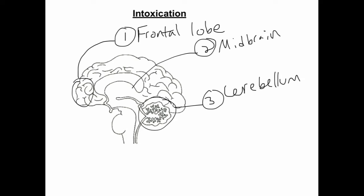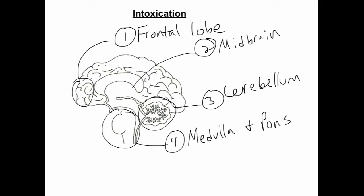The final area to be affected is the pons and medulla oblongata, where the individual usually passes out. Brain centers that control heart rate and respiratory rate are here and are anesthetized by alcohol. Polyuria occurs when intoxicated because of antidiuretic hormone depression, leading to increased water and mineral loss, causing polydipsia and dehydration.